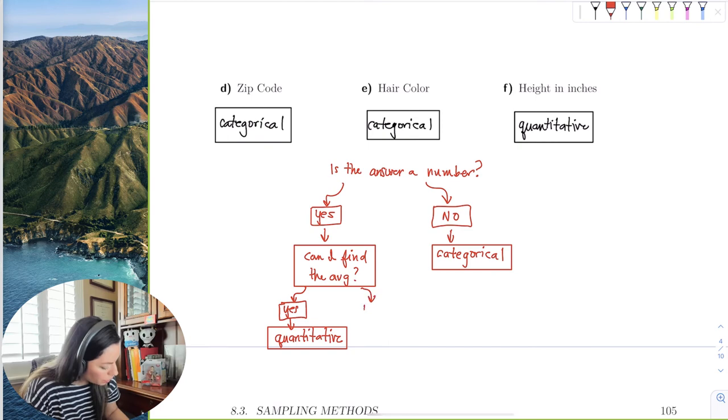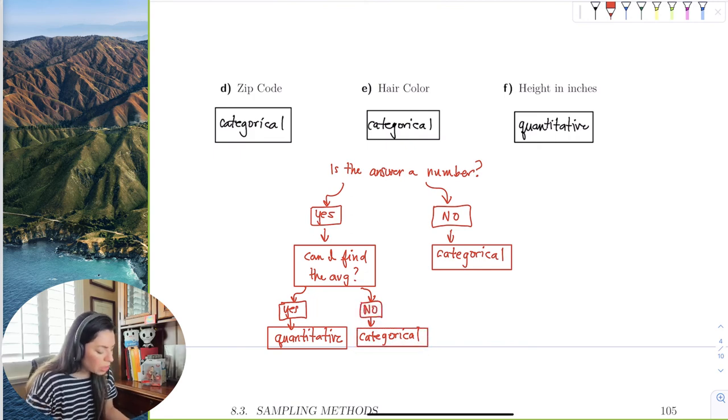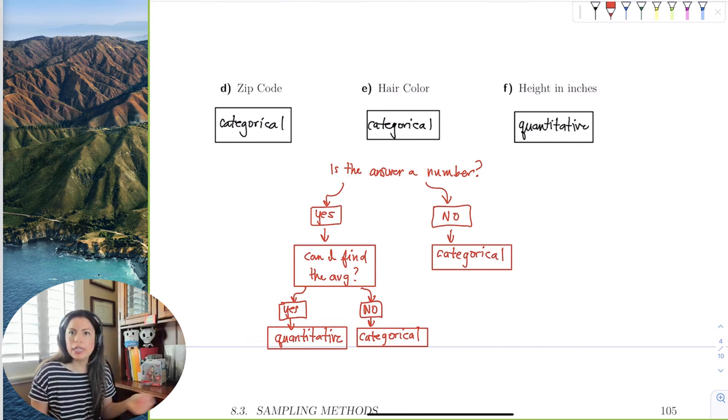And if this answer is no, like the zip code, then we know it's categorical. So there's some thinking process when it comes to the numerical answers. So you want to ask yourself, is the answer a number? If the answer is no, it's like hair color, then it's automatically categorical.